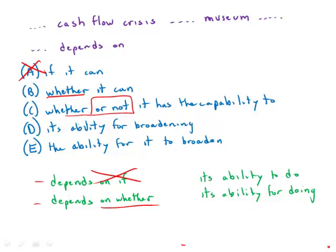And then I love this next phrase: has the capability to, in other words, can. So if we take a three letter word and replace it with a huge honking phrase, do you think that's really going to be correct on the GMAT? C is just an absolute disaster, so get rid of C.